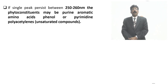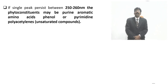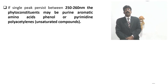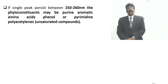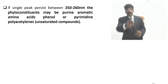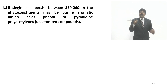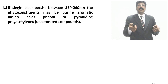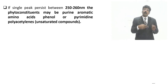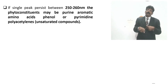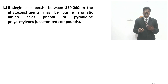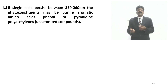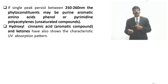If a single peak persists in 250 to 260 nanometers, the phytoconstituent may be a purine, aromatic amino acid, phenol, pyridine, or polyunsaturated compound. These are unsaturated compounds with benzene ring structures having conjugated double bond systems. Aromatic amino acids like phenylalanine, tyrosine, and tryptophan all have conjugated double bond systems with absorption between 250 to 260 nanometers.